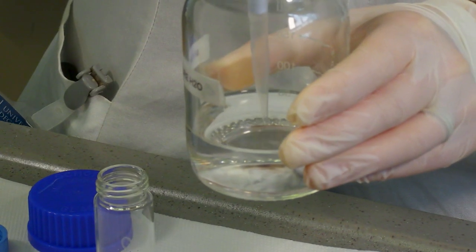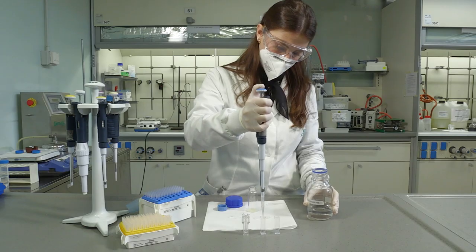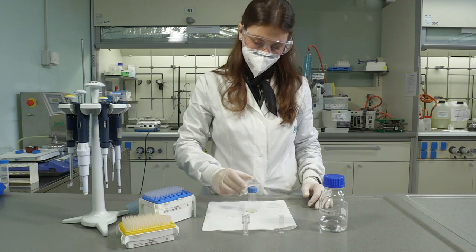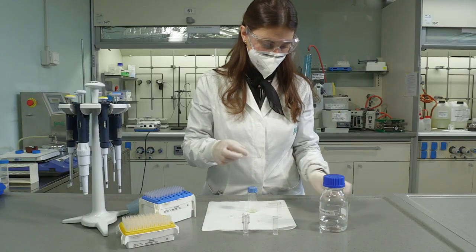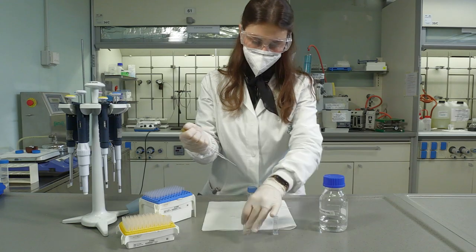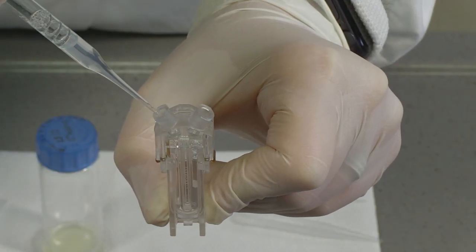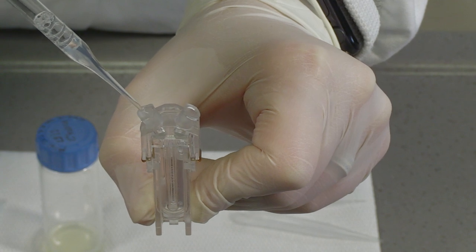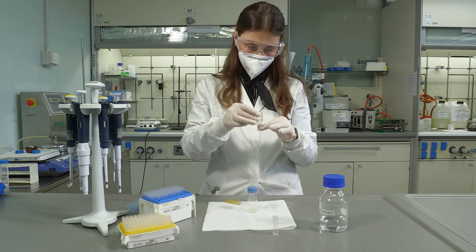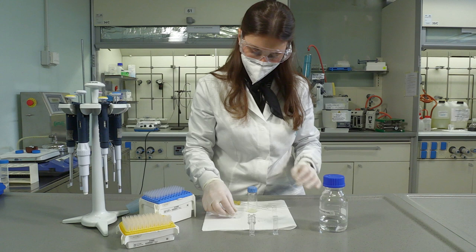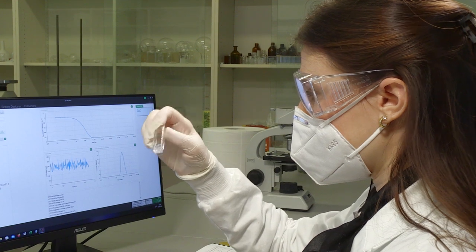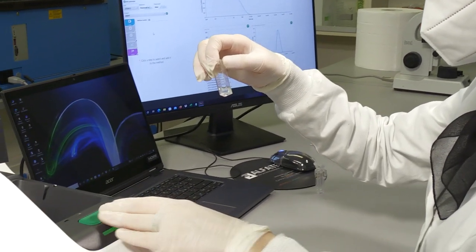Microemulsions are usually analyzed by light scattering without dilutions, whereas vesicle colloidal dispersions are diluted in water with proper dilution. The sample is prepared in a disposable polystyrene cell to measure the size and polydispersity index and in a folded capillary cell to measure the zeta potential. Both cells are placed inside the instrument and analysis is started by the software.